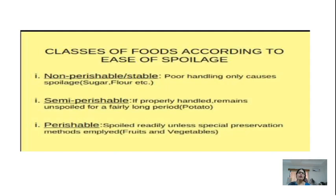There are different classes of food spoilage. There are three types of food. One is non-perishable food. What is non-perishable food? Poor handling only causes the spoilage of this food, like sugar and flour. These are substances which get spoiled only when there is poor handling of these food products.